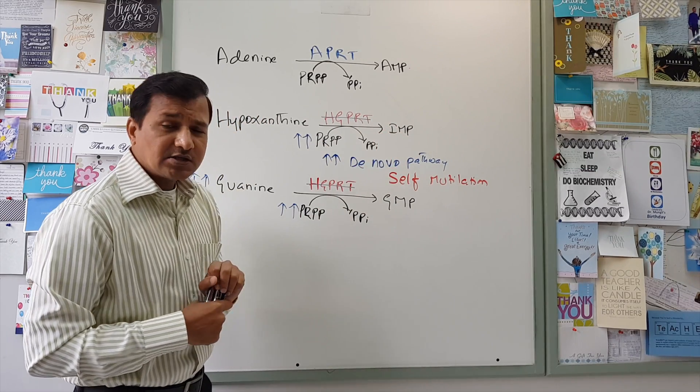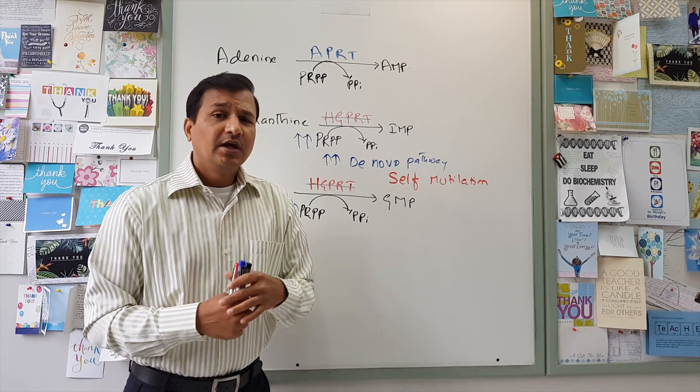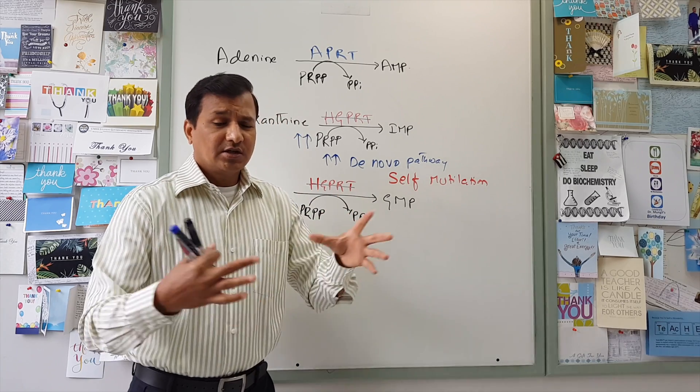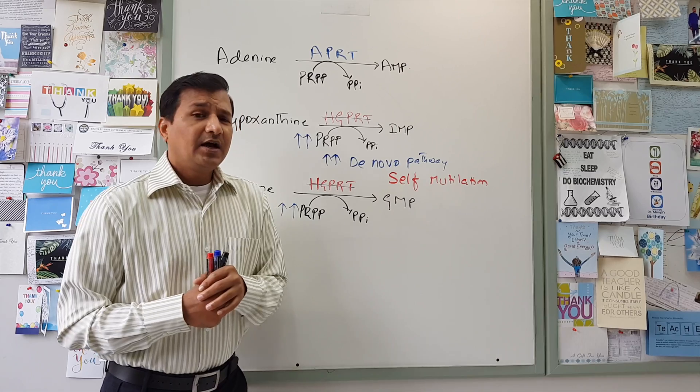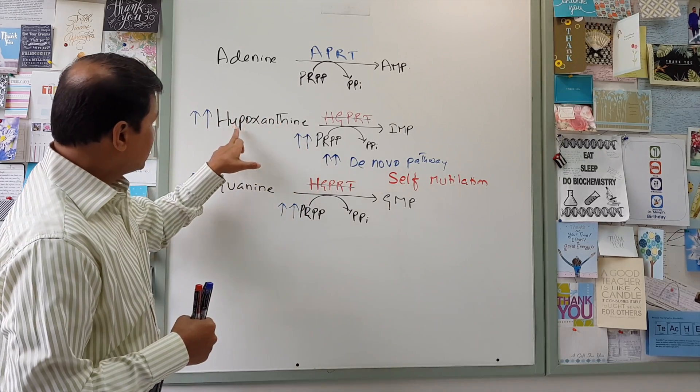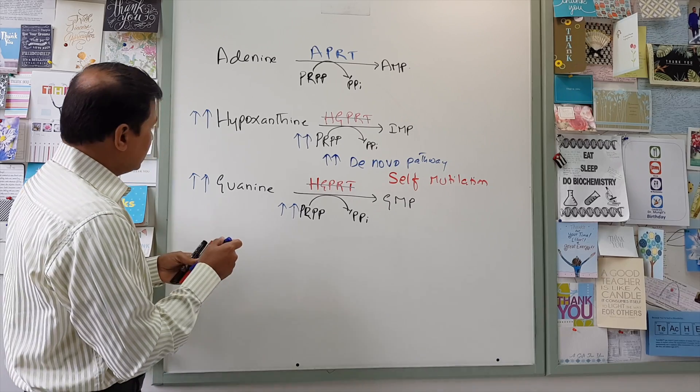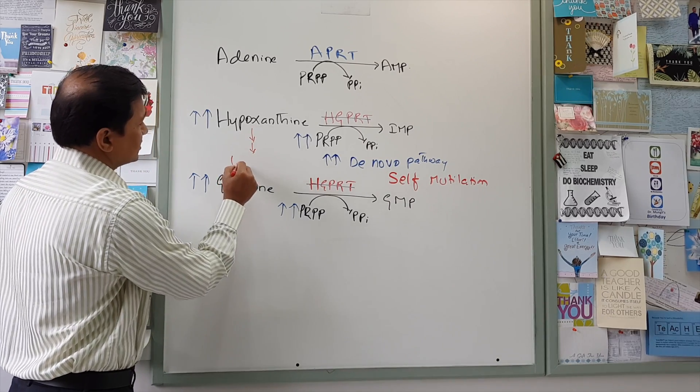And patients with Lesch-Nyhan syndrome will have decreased IQ going into mental retardation, they will have chorea, they will have athetosis, they will have ataxia. So this kind of movement disorders can be seen. And also because there is elevation of hypoxanthine, elevation of guanine here, so these hypoxanthine and guanines will go into uric acid formation, degradation process.